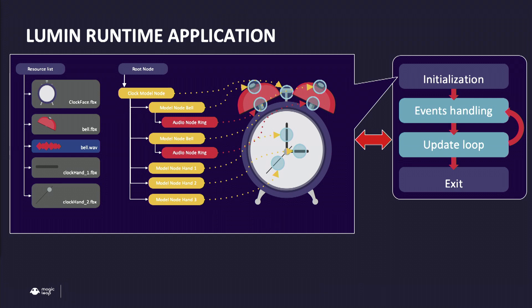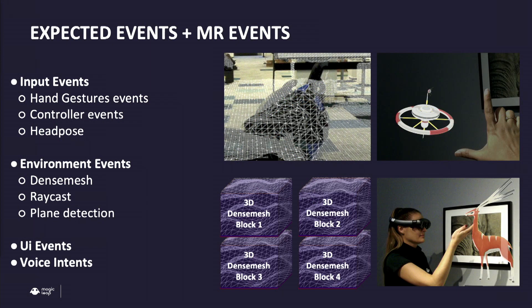The relationship between nodes and resources is that nodes use resources — so we reuse our assets. For events, just like any other app, we have all the basic input events, but for mixed reality we do a lot more. We have gesture events, and the real world around you is represented as a virtual mesh, so you can do raycasting. If you want to place a virtual object in the real world, you do a raycast to know where to place it. Lumen Runtime gives all of those to you as events for the app developer to handle.